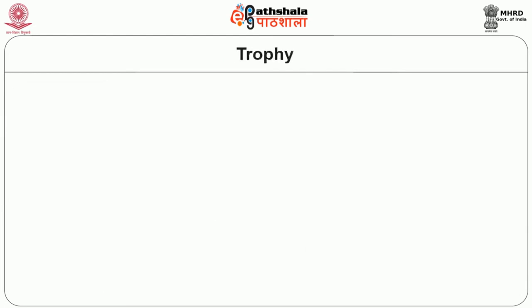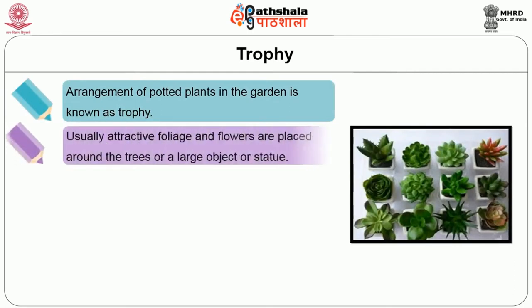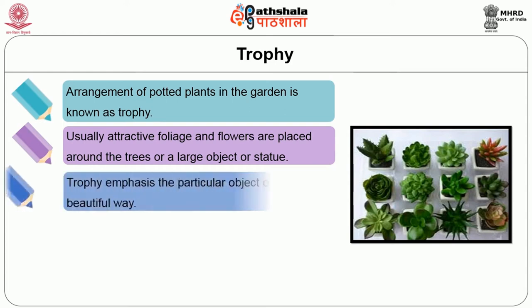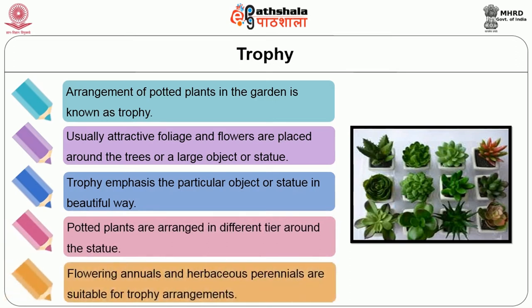Now we will discuss about trophy. Arrangement of potted plants in the garden is known as trophy. Usually attractive foliage and flowers are placed around trees or large objects or statues. Trophy emphasises the particular object or statue in a beautiful way. Potted plants are arranged in different rows around the statue. Flowering annuals and herbaceous perennials are suitable for trophy arrangements.